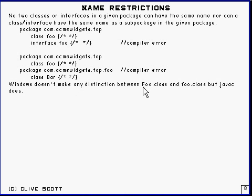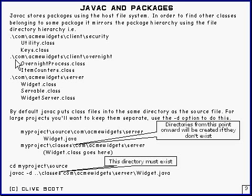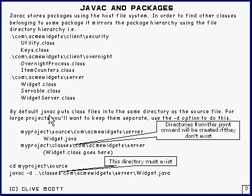You have to be careful with Windows. Windows doesn't distinguish between case — it's case insensitive — but the Java compiler is case sensitive. The standard Java compiler stores class files in a hierarchy and expects source to be in a hierarchy as well. By default the compiler puts class files into the same directory as the source, but you can make it go somewhere else using the minus D option.